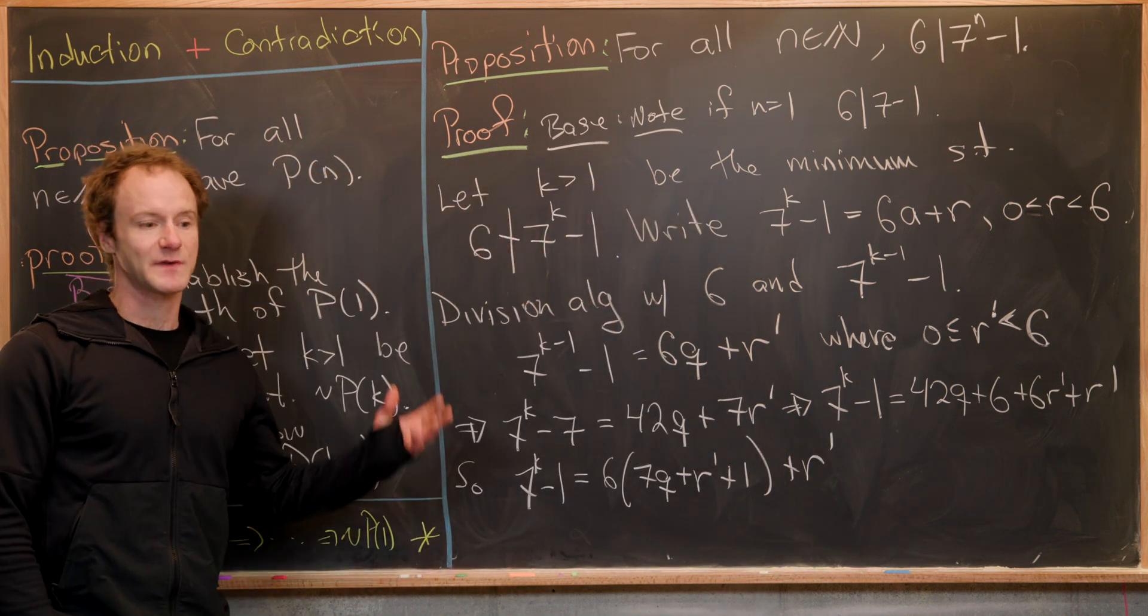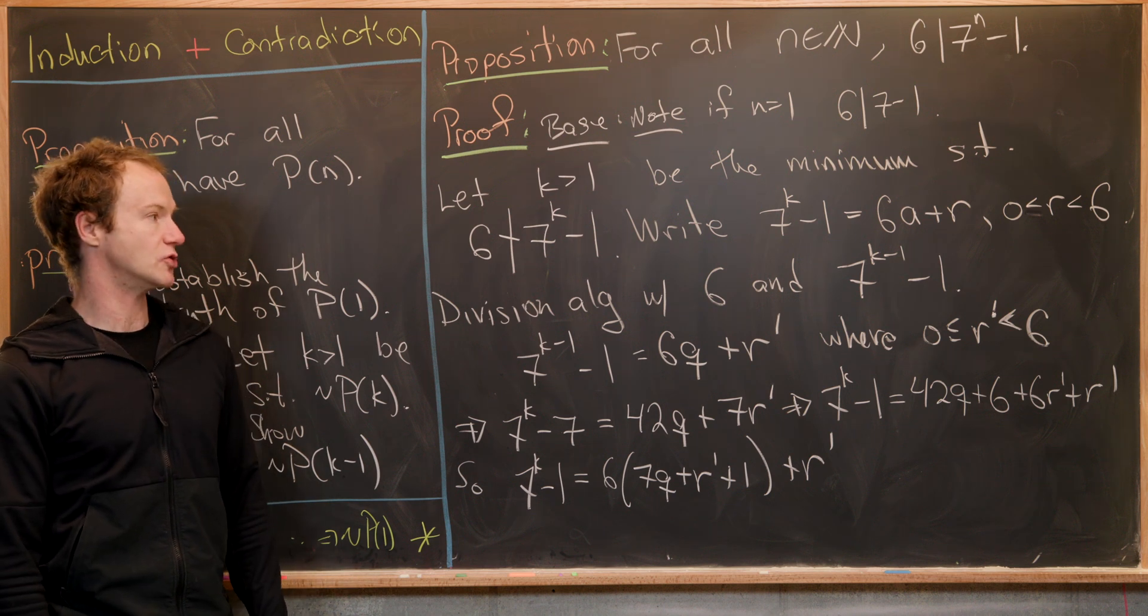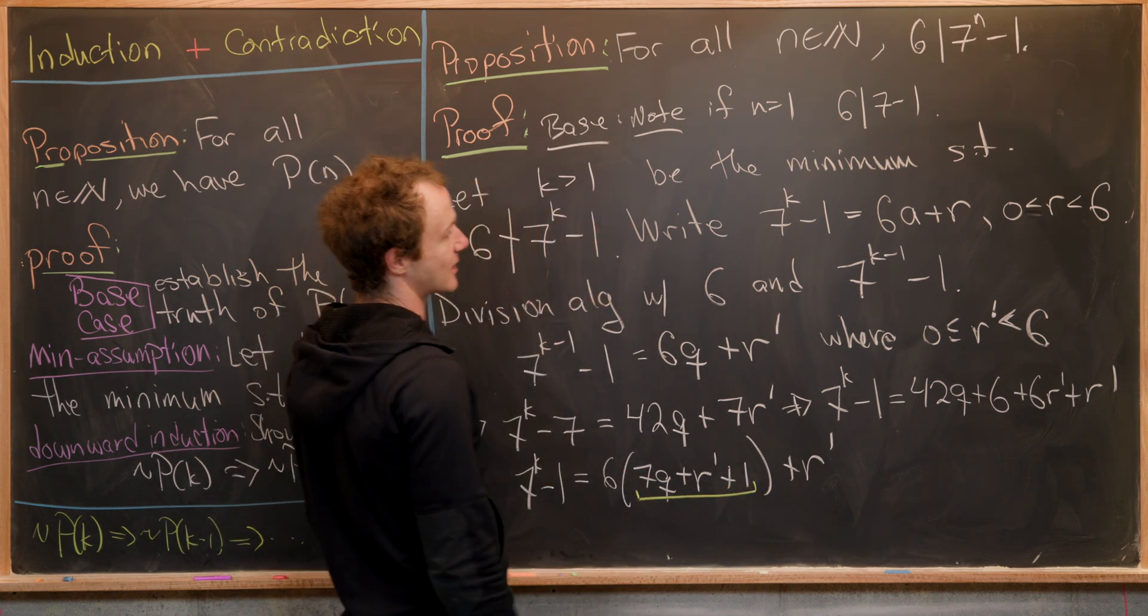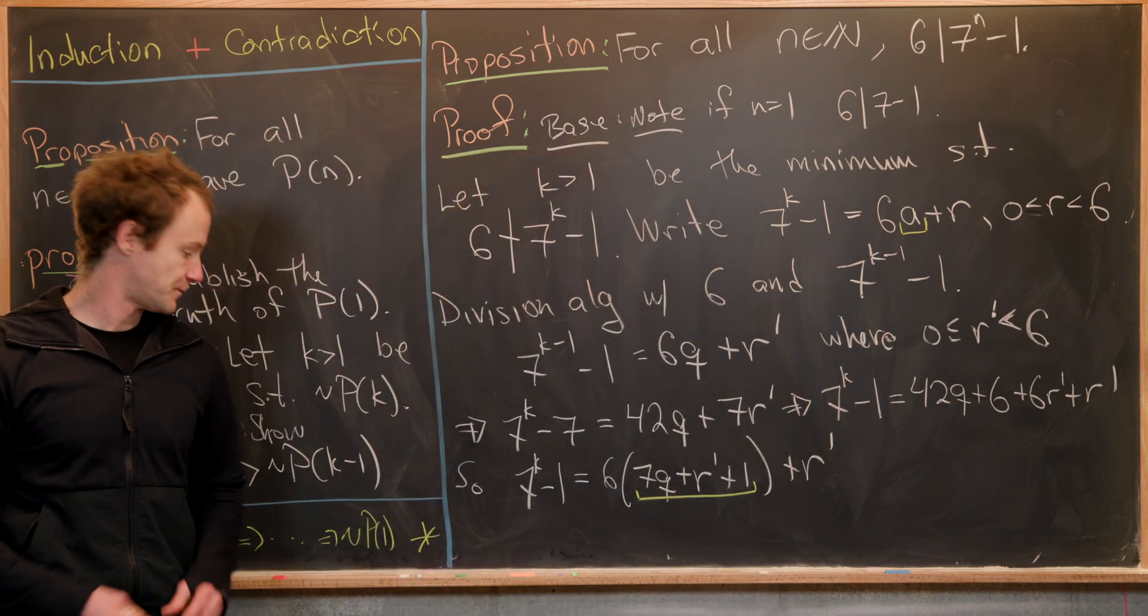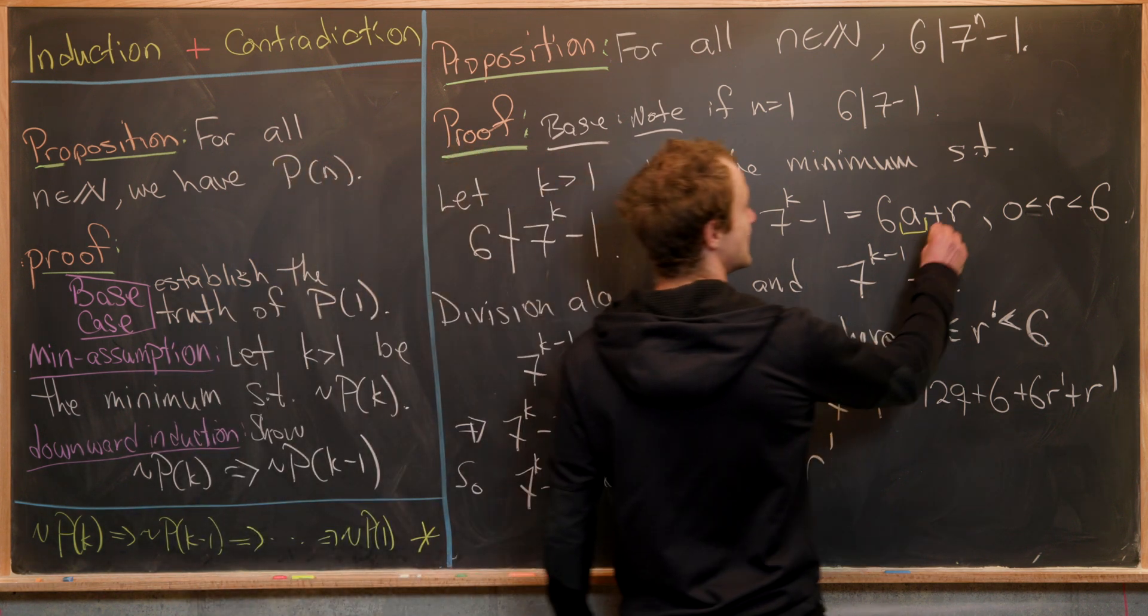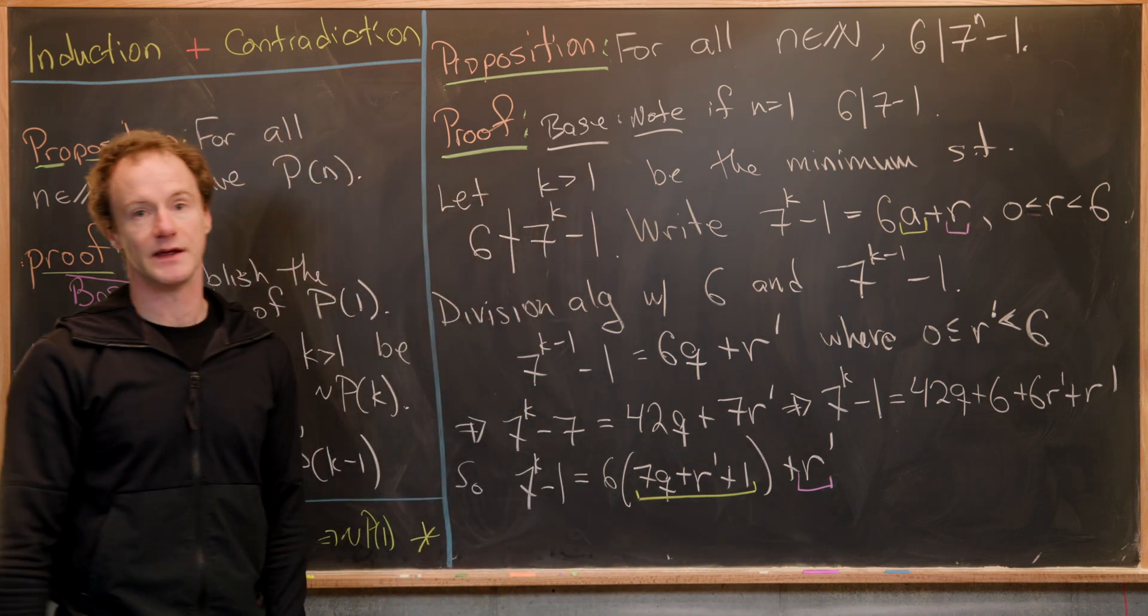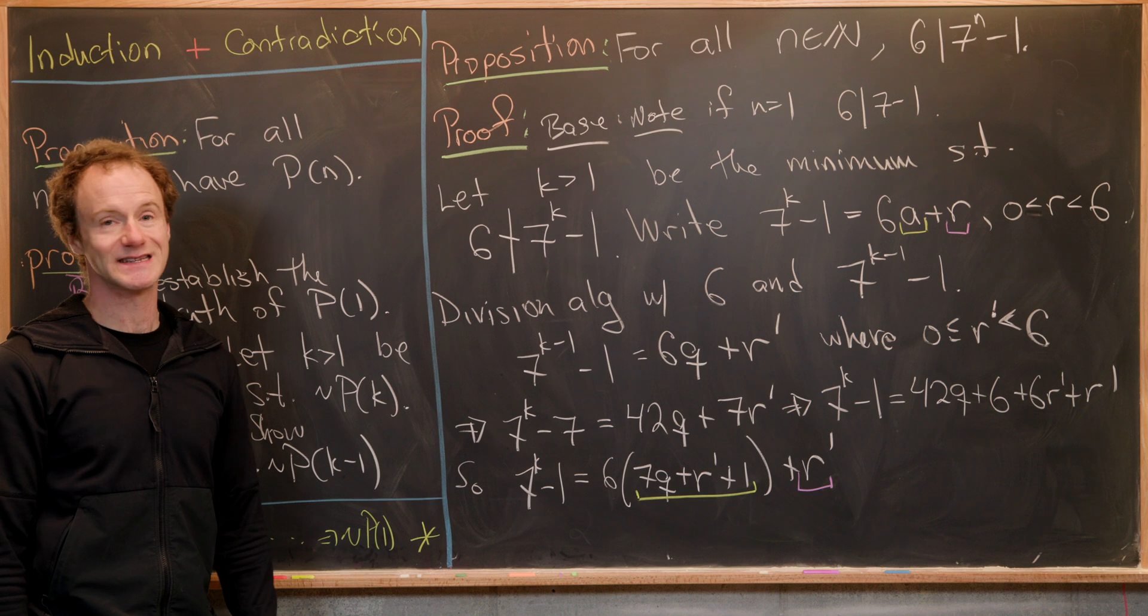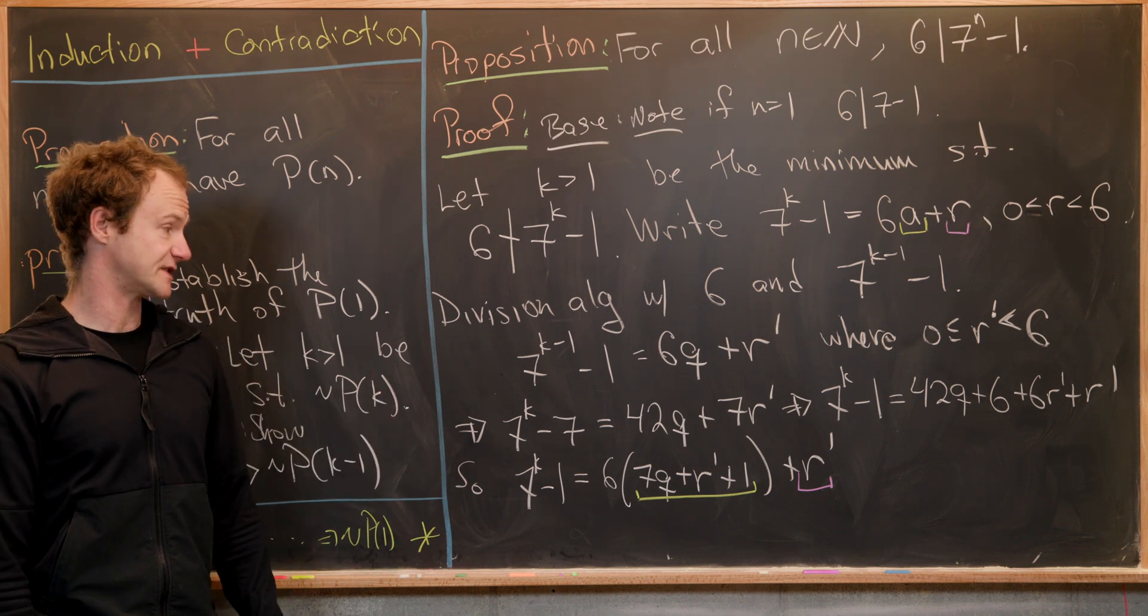We know the division algorithm gives a unique quotient and remainder. Notice that means this thing underlined here equals this a, but more importantly, this r equals this r prime. That's because those are two different ways of expressing seven to the k minus one via the division algorithm.